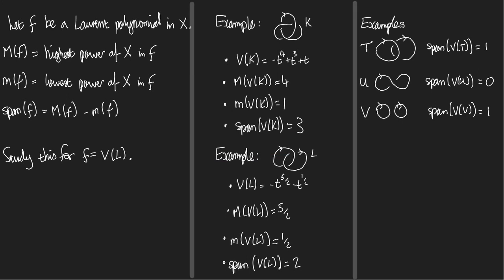Here are some definitions. We're going to let f be a Laurent polynomial in some variable x. So what do I mean by x? I mean it's either t or it's a. It's t if our f is going to be a Jones polynomial and it's a if it's going to be a Kauffman bracket. So given such a Laurent polynomial f we define M(f) to be the highest power of our variable x that we can see in f. And we define little m(f) to be the lowest power of x that we can see in f. And we define span of f to be their difference.